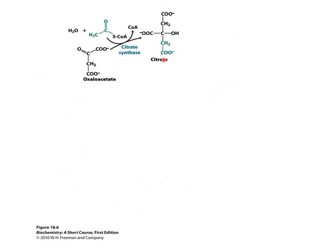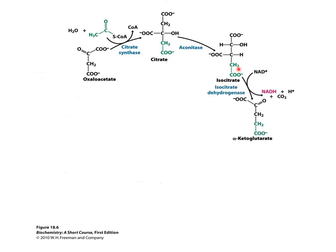Citrate needs the help of the enzyme aconitase to rearrange into isocitrate, which is basically an isomer of the citrate molecule, but it is more reactive and less stable. The reactive isocitrate molecule will then undergo oxidative decarboxylation to form the 5-carbon alpha-ketoglutarate molecule.